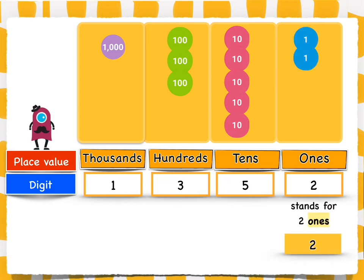What does the digit in the ones place stand for? It stands for two ones, which gives the digit a value of two.